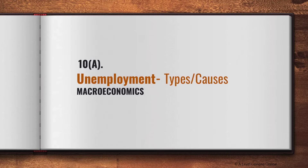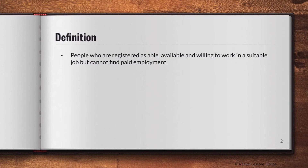Unemployment basically means that someone is jobless. We'll go through the formal definition: unemployment refers to people who are registered as able, available, and willing to work in a suitable job, but cannot find paid employment. This is when someone is willing and able to take up a job, but due to certain reasons, the job is simply not available to them.